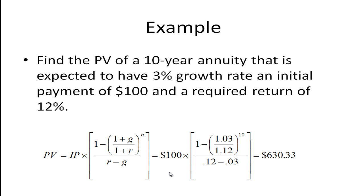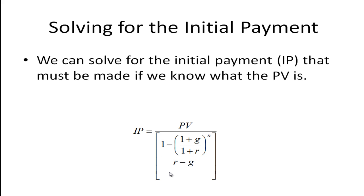We can also solve for what the initial payment is if that's what we're interested in. So if we know what the present value is and we want to know what initial payment we need to reach that present value we can just take the previous formula. The previous formula was the present value equals the initial payment times what's here so I just divided both sides by what's in the bracket here and I get the initial payment.